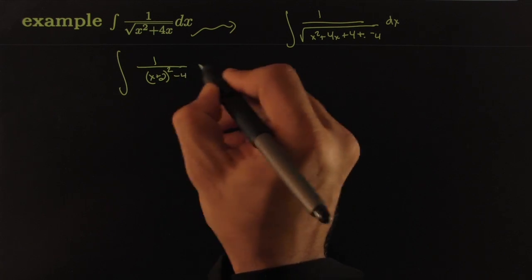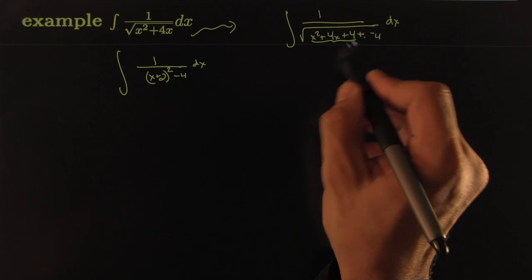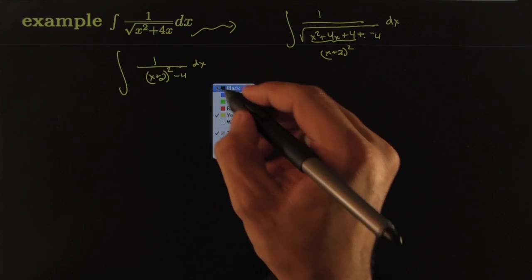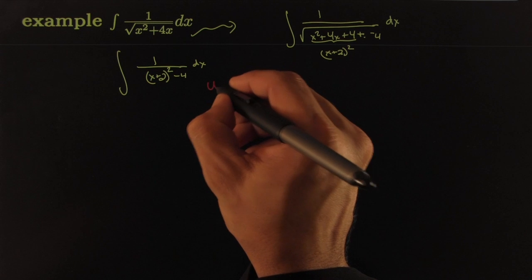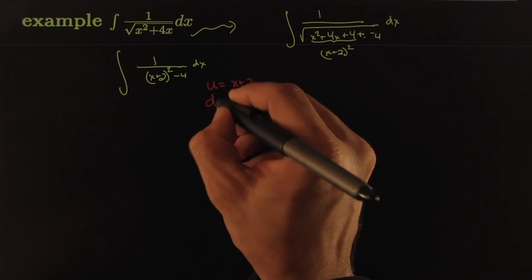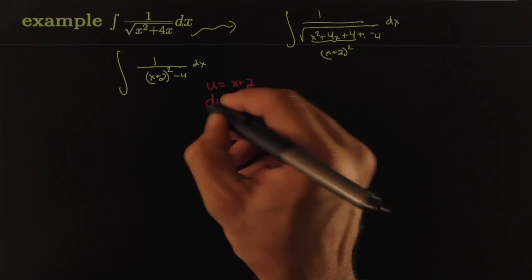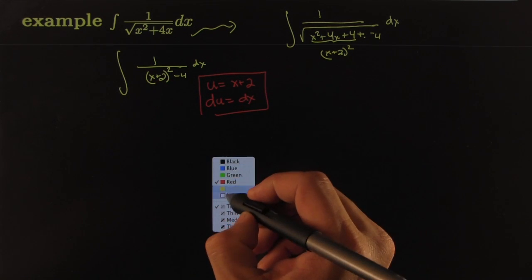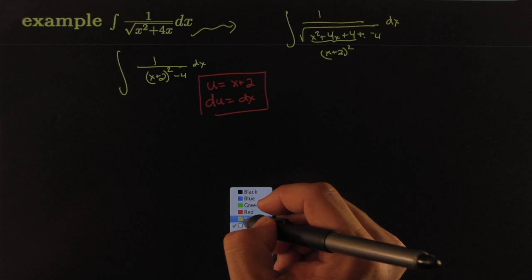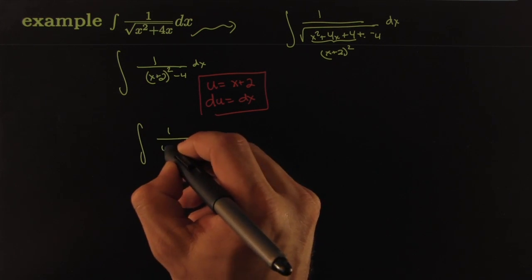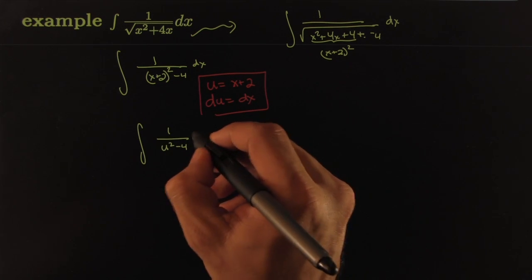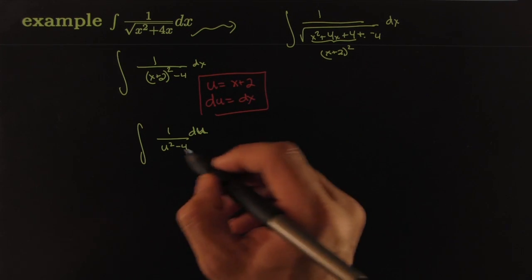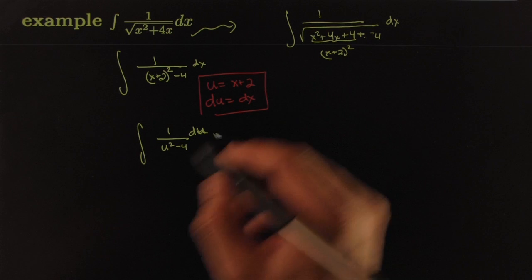This piece becomes (x+2)² and we can use a u-substitution. Let u = x + 2, which forces du = dx. This little dictionary handles that piece, and the integral becomes 1 over (u² − 4) du. Now the question is: what does that integral look like?